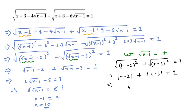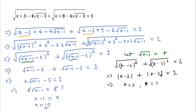For t = 2: |2 − 2| + |2 − 3| = 0 + |−1| = 0 + 1 = 1. So t = 2 satisfies the equation. For t = 3: |3 − 2| + |3 − 3| = 1 + 0 = 1. So t = 3 also satisfies the equation.